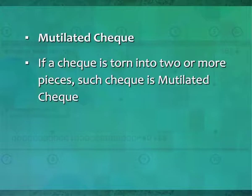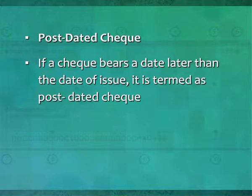A mutilated cheque is one that is torn into two or more pieces. If presented for payment, the bank will not make payment against such a cheque without confirmation from the drawer. However, if a cheque is torn only at a corner and no material factors are erased or cancelled — and the payee, signature, and MICR line are intact — the bank may process it. A postdated cheque bears a date later than the date of issue, meaning the amount will not be drawn from the account until the date written on the cheque.